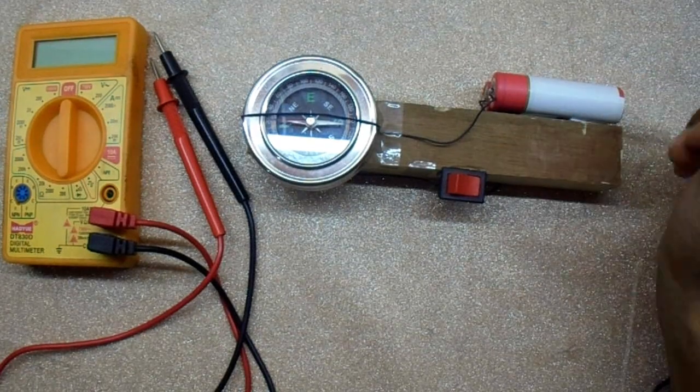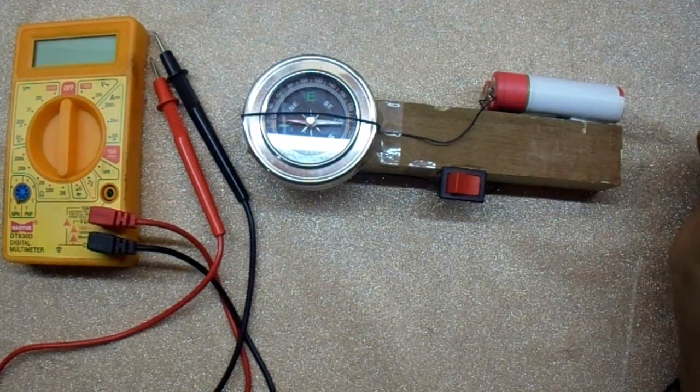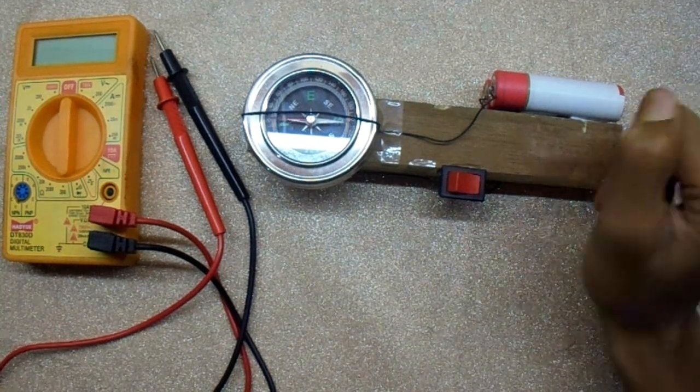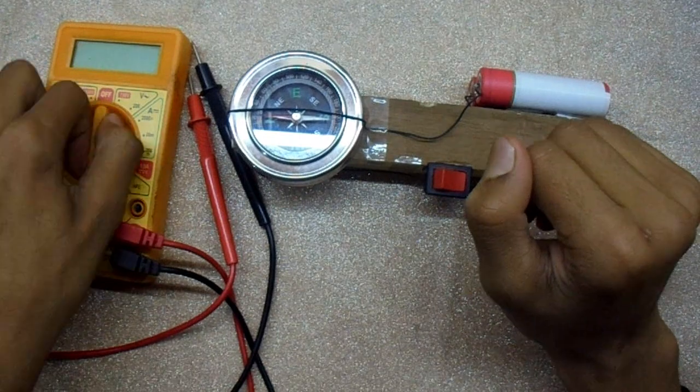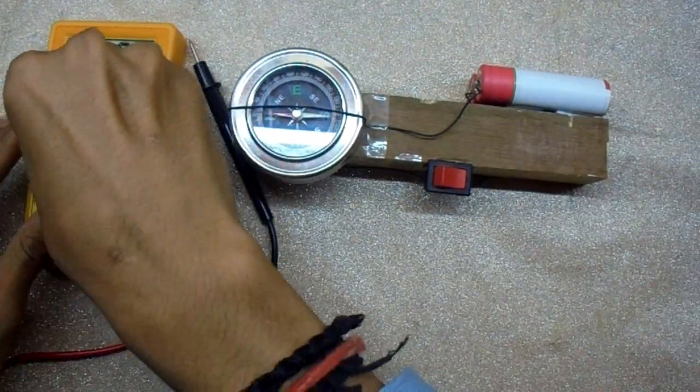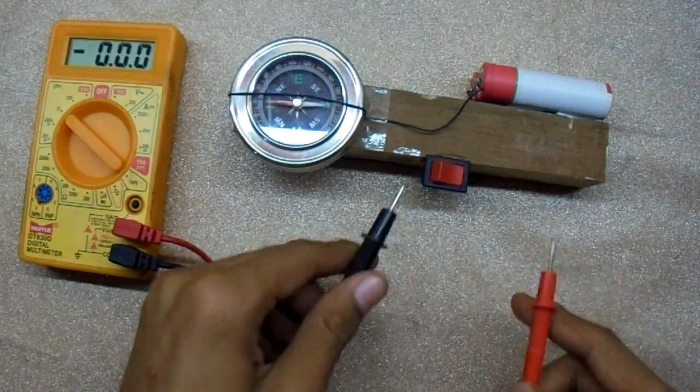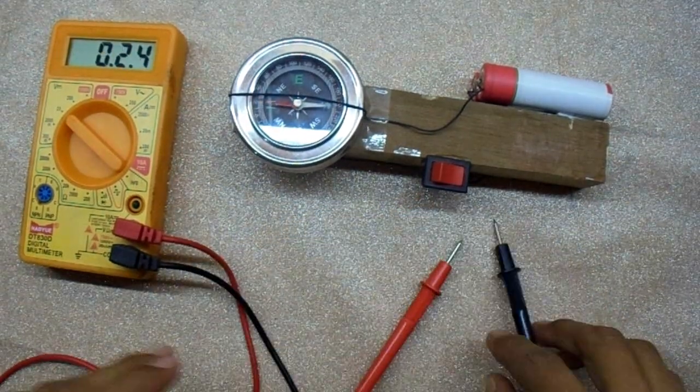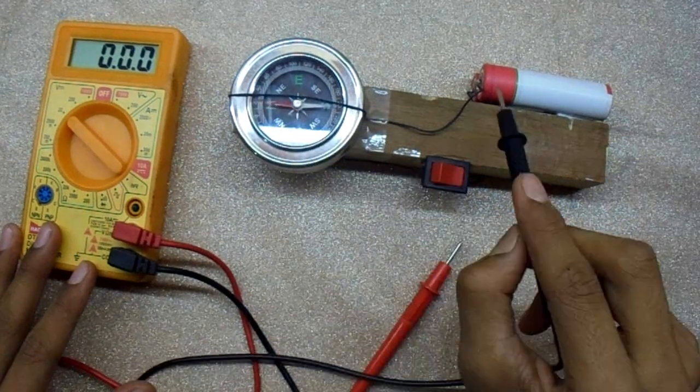First of all, we need to know the direction of current flow. Using a voltmeter, we can see it's flowing in this direction.